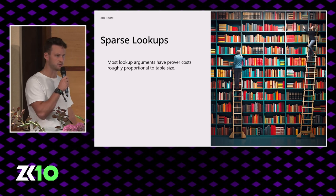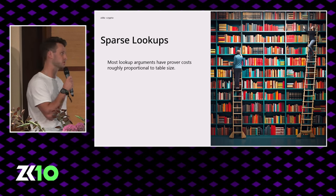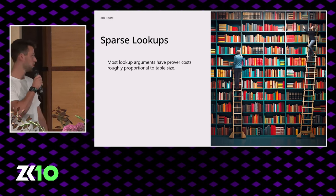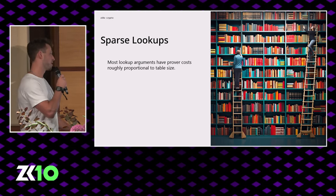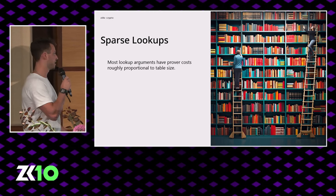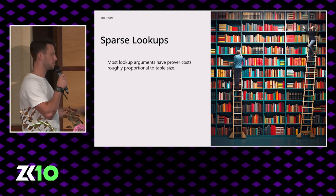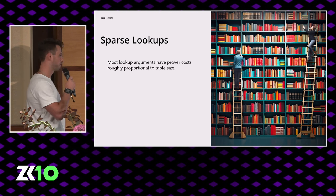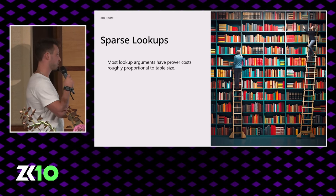This brings us to an interesting argument. Most lookup arguments have prover costs roughly proportional to the table size. We like to analogize this to building a library, building all the bookshelves, filling it with books, and then getting on a ladder and pulling two books out of that library and then burning it to the ground — hugely wasteful. So it begs the question if there's a better way.